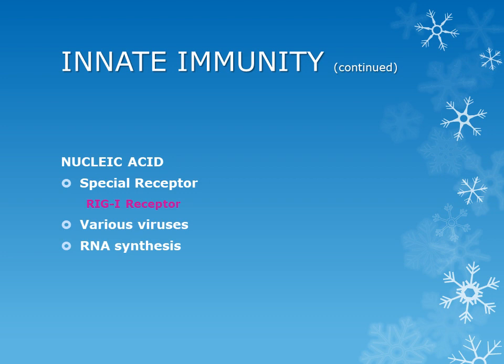These receptors basically recognize the RNAs or DNAs synthesized by various viruses. For example, paramyxovirus synthesizes RNA, and this RNA is recognized by the RIG-I helicase receptor. As a result, when the RNA is recognized by the receptor, it will result in the formation of various interferons, and as you know, interferons have antiviral properties. So the interferons will start destroying the culprit virus.